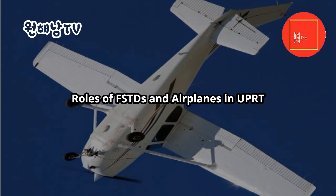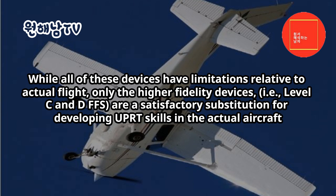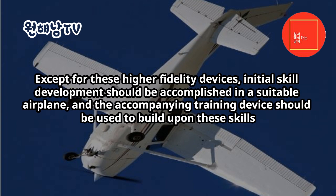Roles of FSTDs and airplanes in UPRT. Training devices range from aviation training devices (ATDs) — basic and advanced — to FSTDs such as flight training devices (FTDs) and full flight simulators (FFS), and have a broad range of capabilities. While all of these devices have limitations relative to actual flight, only the higher fidelity devices — level C and D FFS — are a satisfactory substitution for developing UPRT skills in the actual aircraft. Except for these higher fidelity devices, initial skill development should be accomplished in a suitable airplane, and the accompanying training device should be used to build upon these skills.